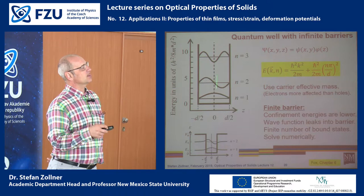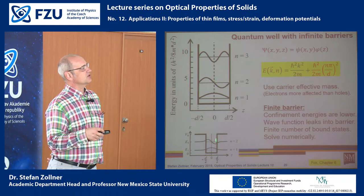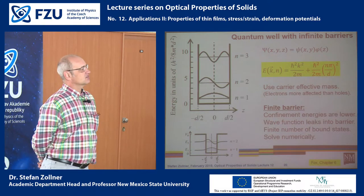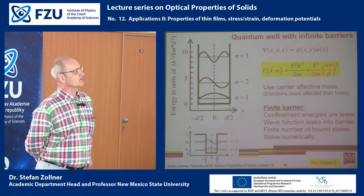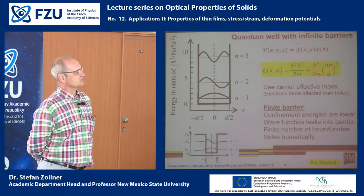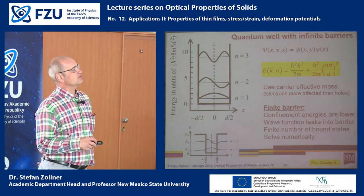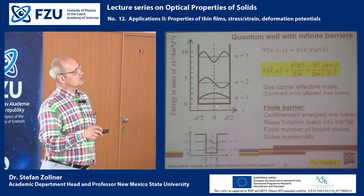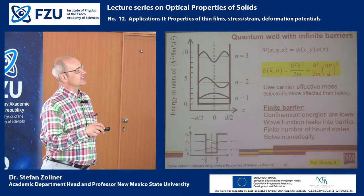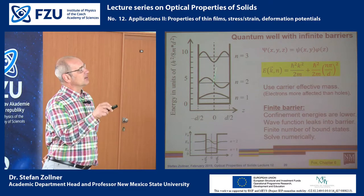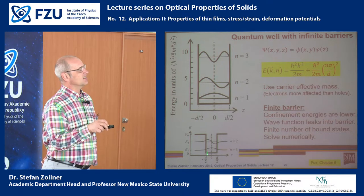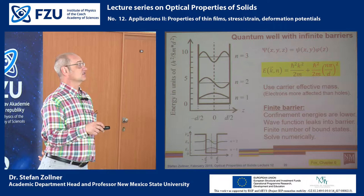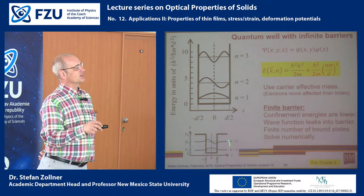In practice, barriers are finite, so wave functions penetrate a little into the barrier. The Schrödinger equation must be solved numerically, and confinement energies are smaller than for infinite barriers. Also, the number of confined states is limited — if the quantum well is made thin enough, there will be no confined states at all.